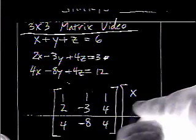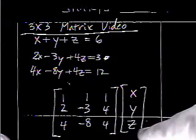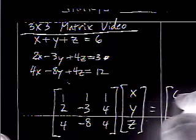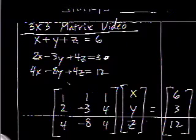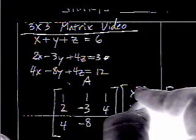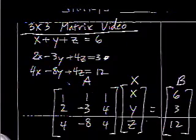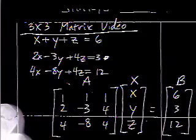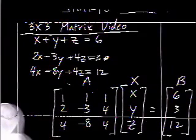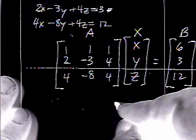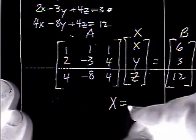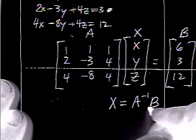You've got your variables, your x, your y, your z, and your constant matrix, your 6, 3, and 12. Now, this is what we call matrix A, matrix X, and matrix B. And we know that in order to get matrix X, we want to left multiply by A inverse, and when we do that, we end up with A inverse B.